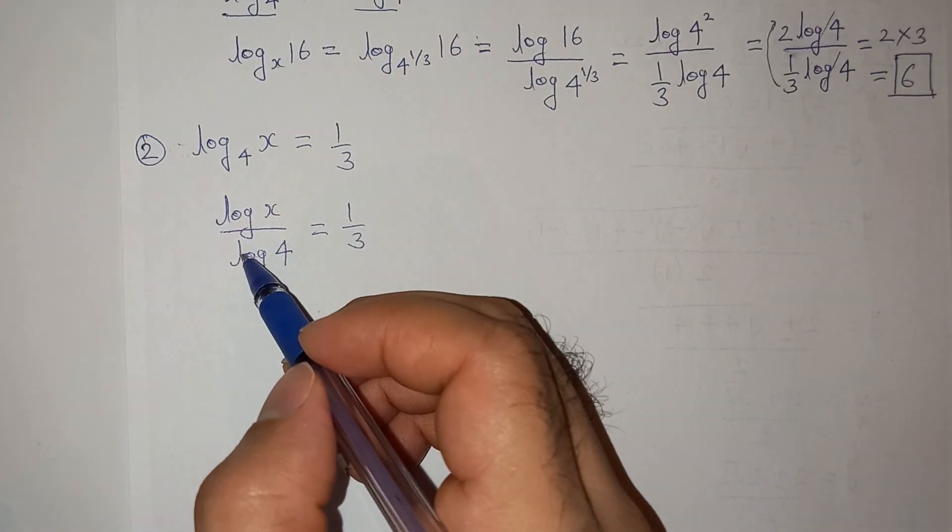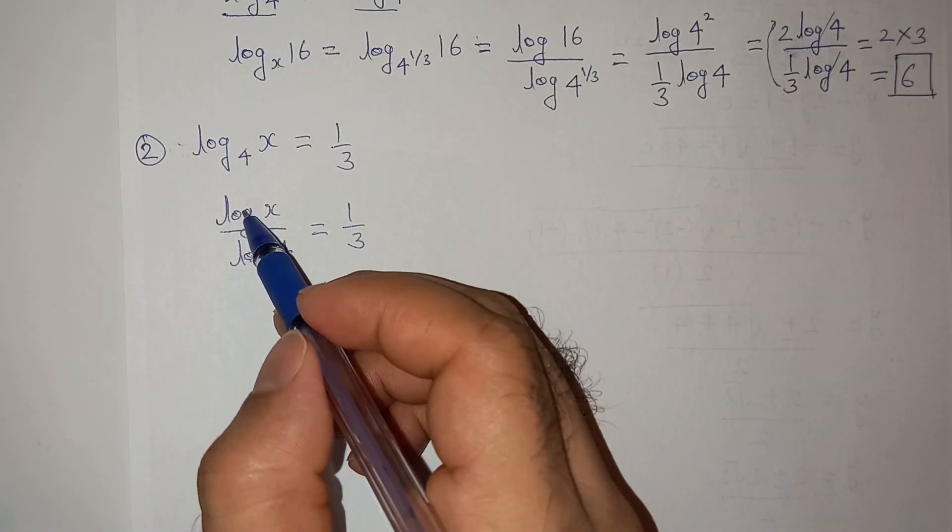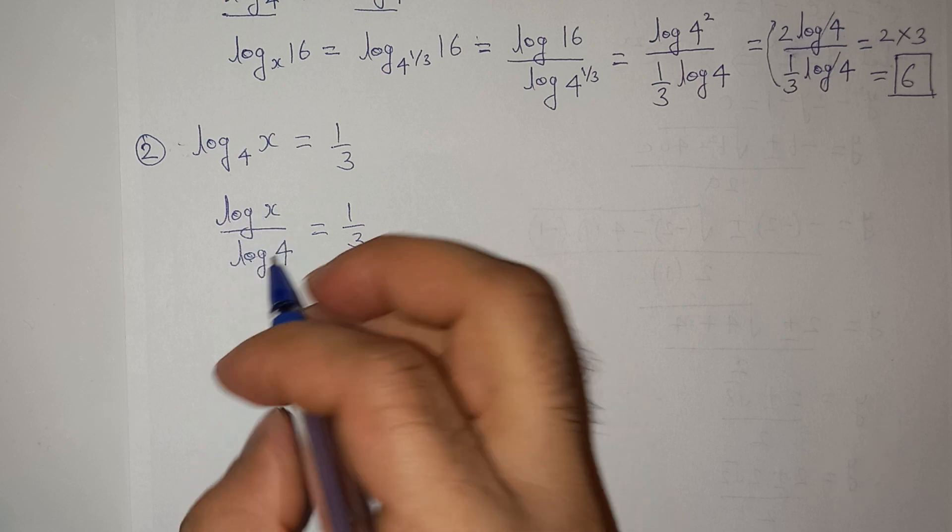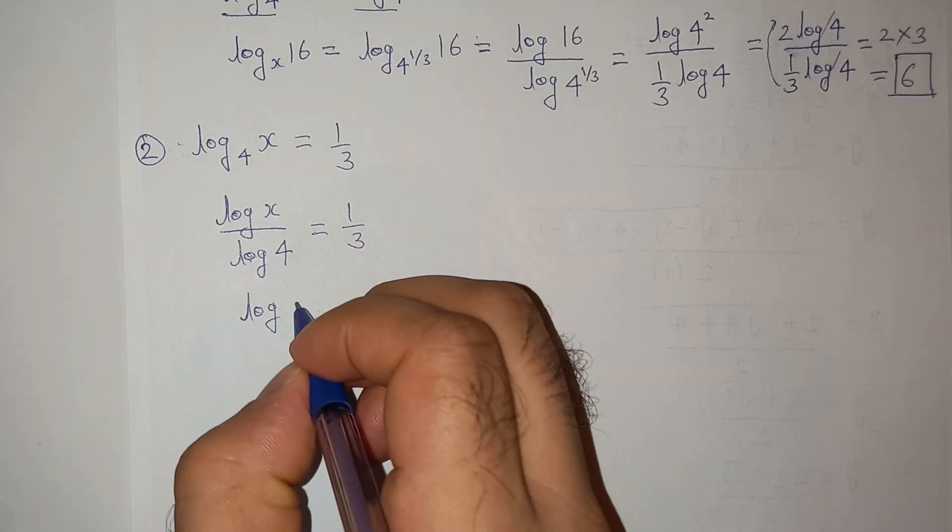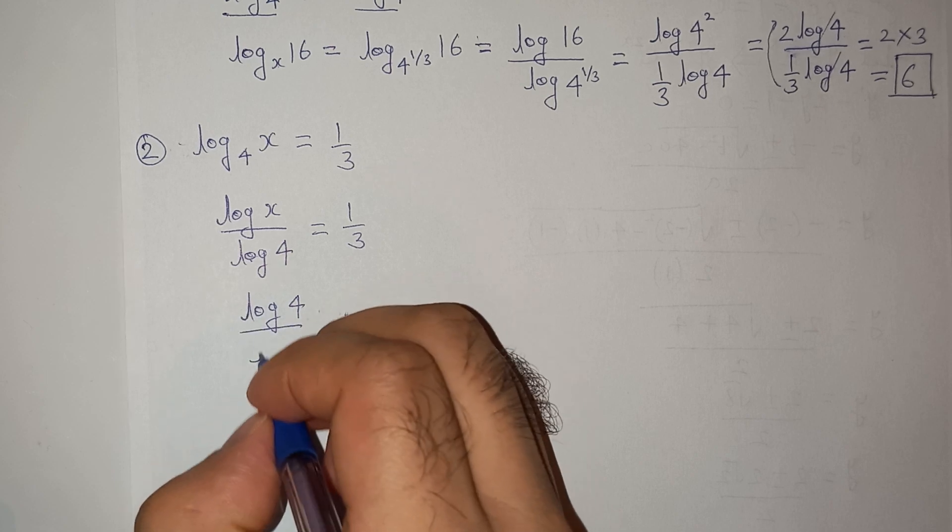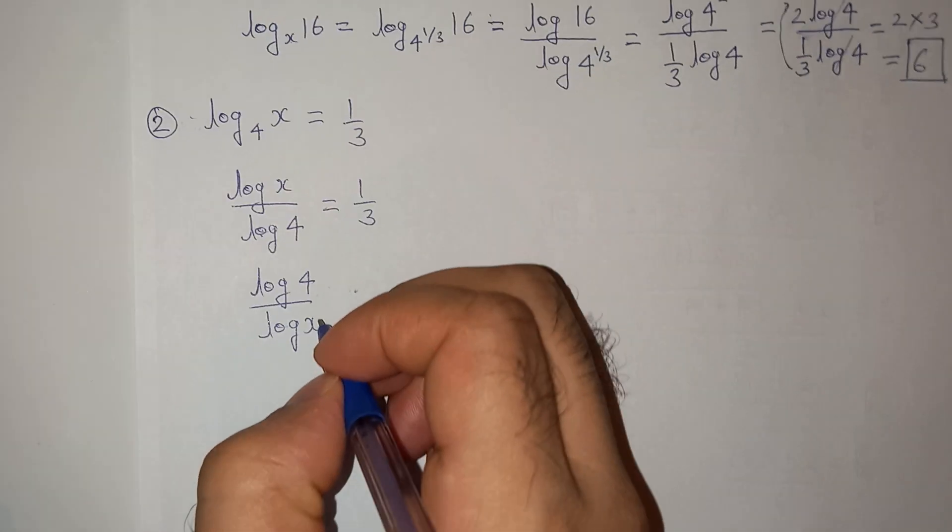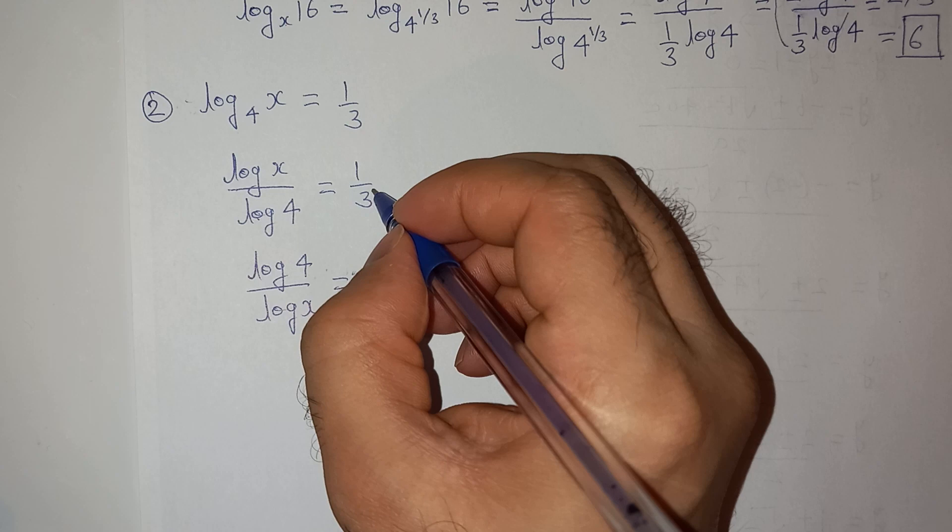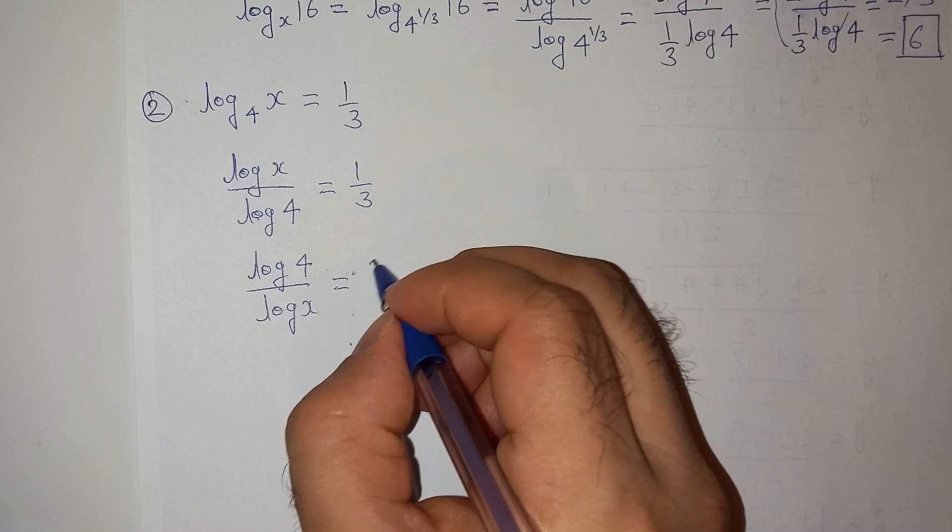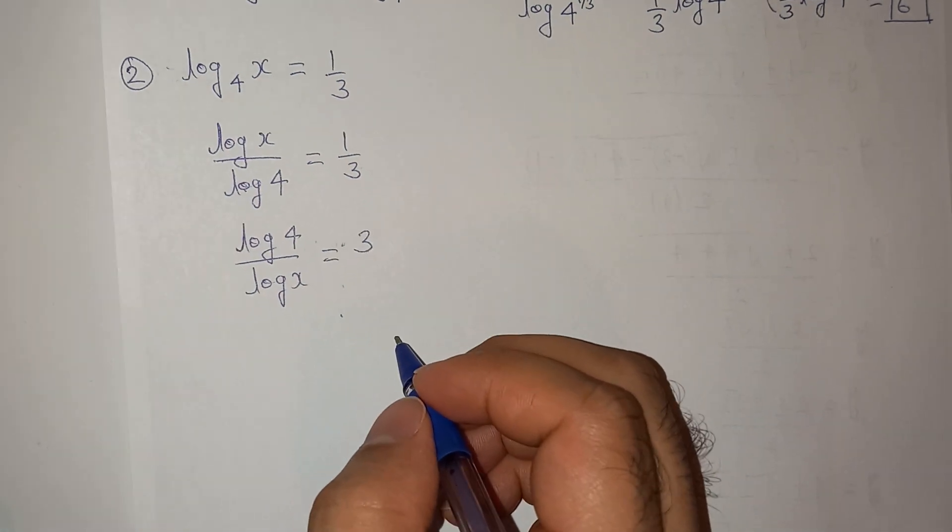Now let's take the denominator on the numerator and the numerator on the denominator—let's interchange. log(4)/log(x) equals 3/1, which is 3.